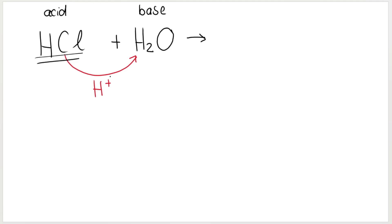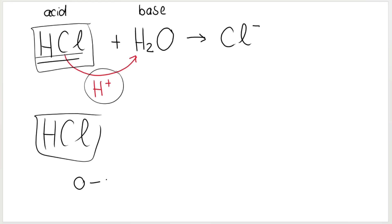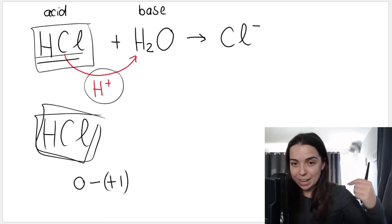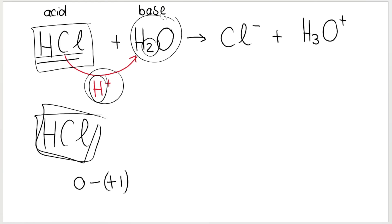When HCl gives away its proton, its H plus, it becomes Cl minus. For those who don't understand where the minus comes from: HCl is initially neutral — no positive or negative charge, its charge is zero. When it gives away a hydrogen, it's giving away a plus one, so we're subtracting a plus one from something neutral. If you are neutral and you give away a positive, you become negative. Then the base accepts the proton, it accepts the H plus, so it becomes H3O plus. It was H2O, it accepts another H, so it becomes H3O plus — it was neutral and now it gets a positive charge because it's accepting a proton.